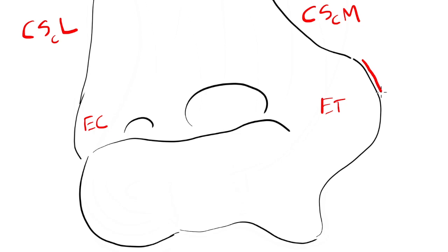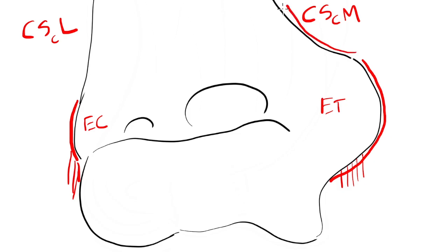The epitrochlea, or medial epicondyle, is proximal to the trochlea. It is where the medial collateral ligament inserts proximally, and it is more prominent than the lateral epicondyle. The lateral epicondyle is proximal to the condyle. The lateral collateral ligament inserts proximally into its most posterior region. The medial supracondylar crest is the proximal continuation of the epitrochlea. The lateral supracondylar crest is the proximal continuation of the lateral epicondyle. Anteriorly, we can see the coronoid fossa, which houses the coronoid process of the ulna during maximum flexion.